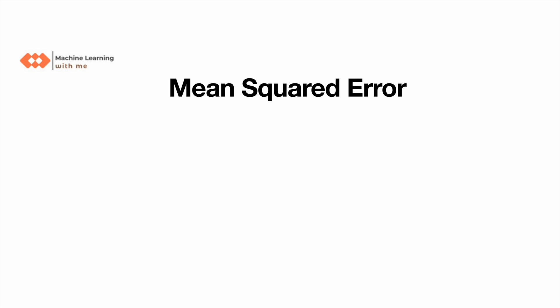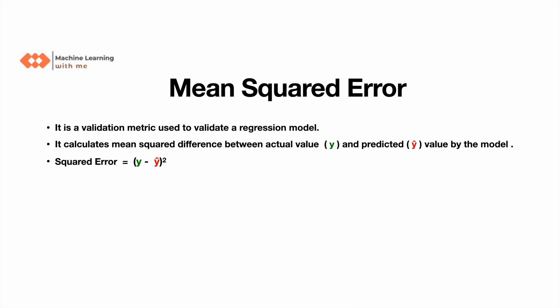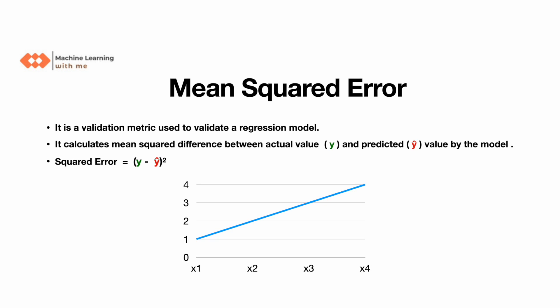Welcome back to the channel 'Machine Learning with Me.' Previously we discussed mean absolute error and its advantages and disadvantages. Today we are going to discuss mean squared error. It is a validation metric used to validate a regression model. It calculates the mean squared difference between the actual value and the predicted value by the model.